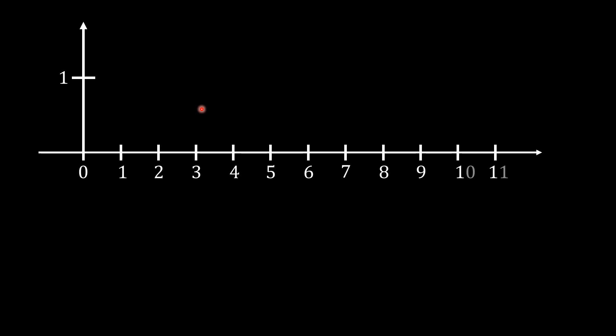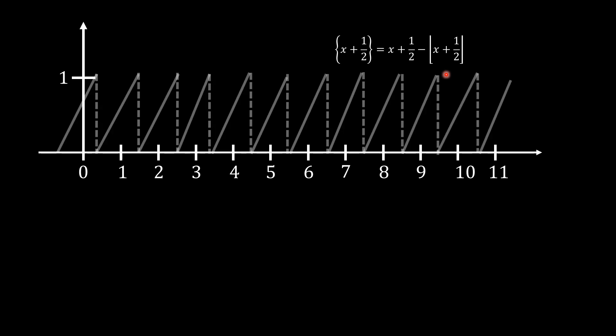What we end up getting is that the difference between the function x plus one-half and the floor function is just the sawtooth-like representation. The fractional part changes from 0 to 1, then it drops back to 0 as soon as we get to the next integer value, and it continues so on and so on.